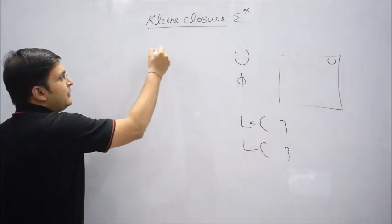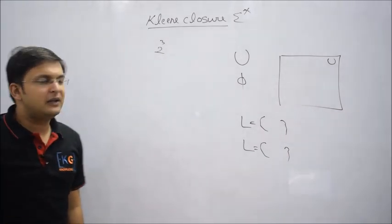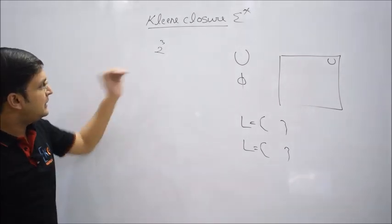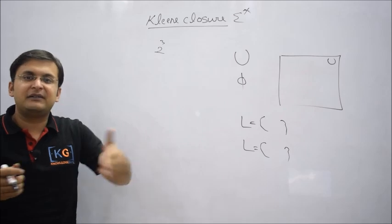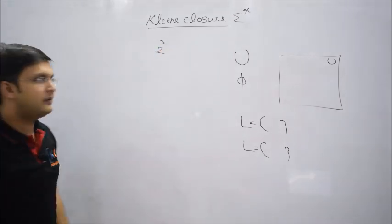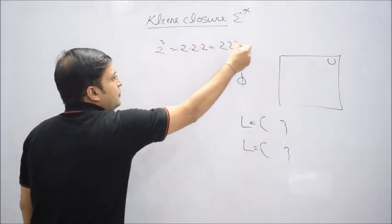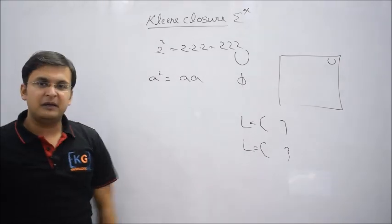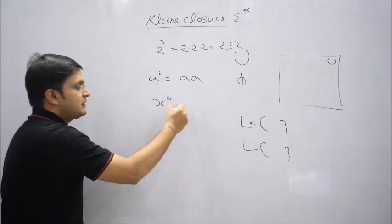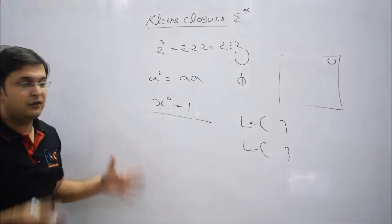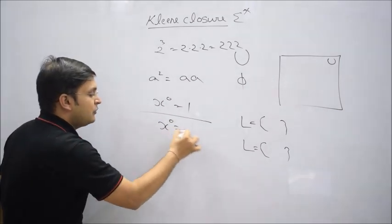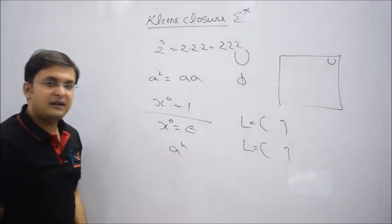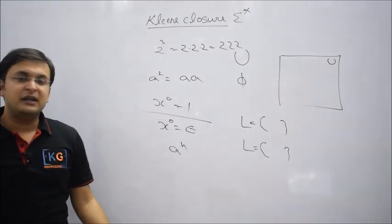To understand this mathematically, in mathematics 2 raised to power 3 means 2 × 2 × 2 = 8. But in this subject, since we are working on strings, anything raised to a power simply means that symbol concatenated with itself that many times. For example, 2 raised to power 3 means 2 concatenated with 2 concatenated with 2, giving '222'. And a raised to power 2 is simply 'aa'. Also, anything raised to power 0 in this domain gives null or epsilon — a string of length 0.